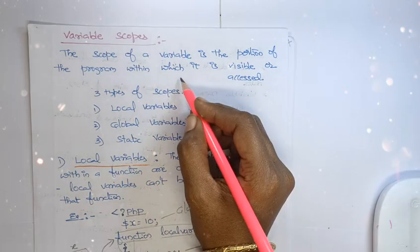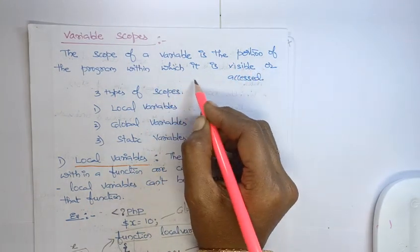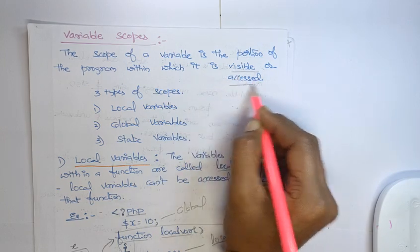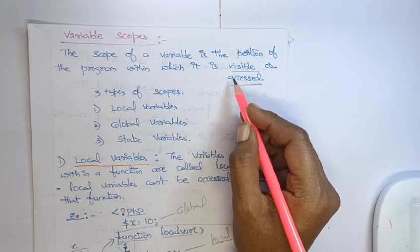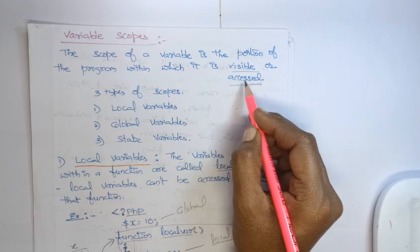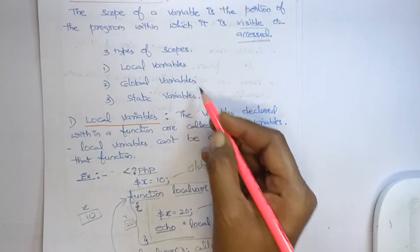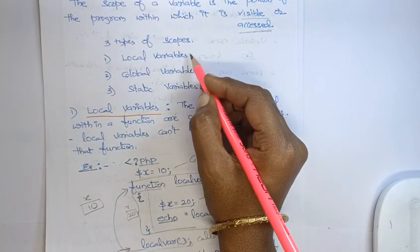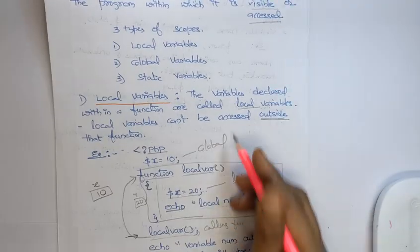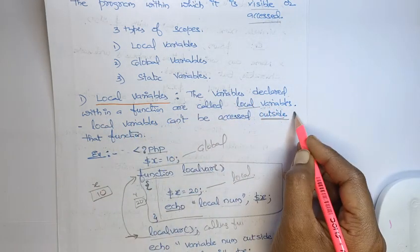Now we will see variable scopes. The scope of a variable is the portion of the program within which it is visible or accessible — that is, until where within a program a variable can be accessed. There are three types of scopes: local variable, global variable, and static variable. A local variable is a variable declared within a function.